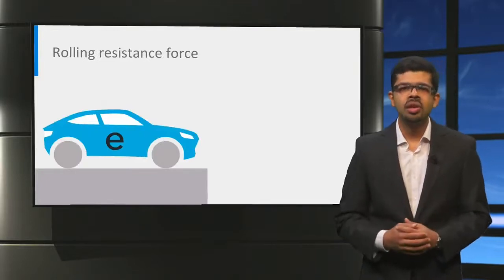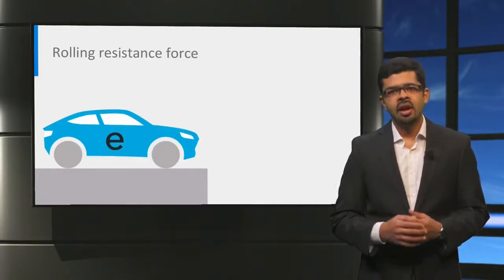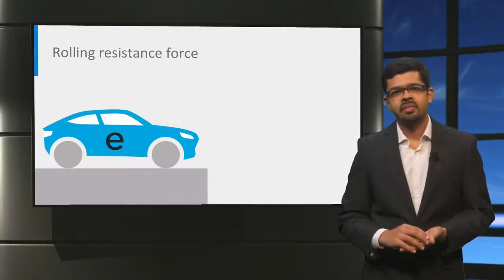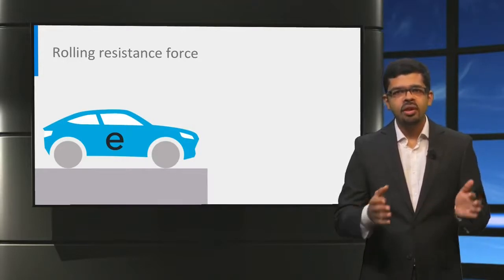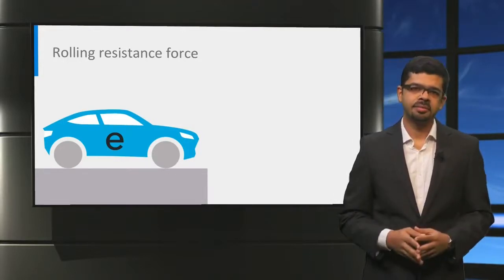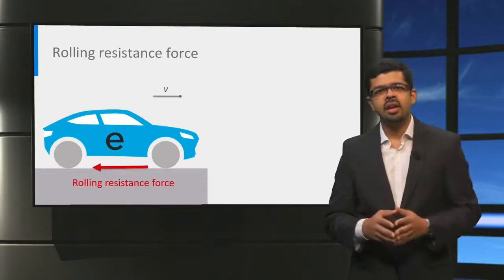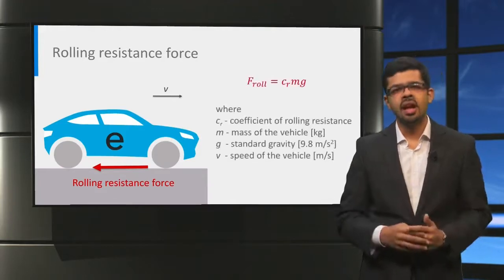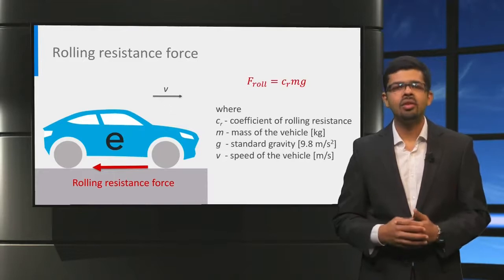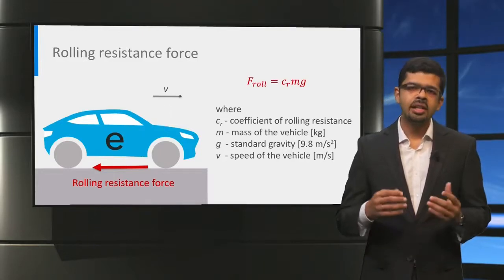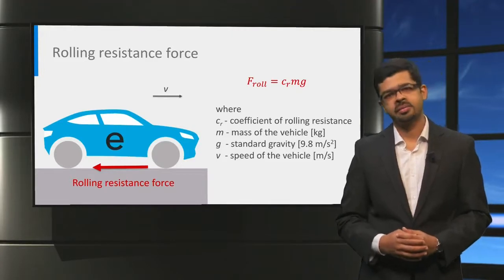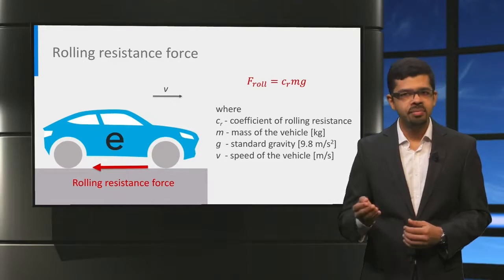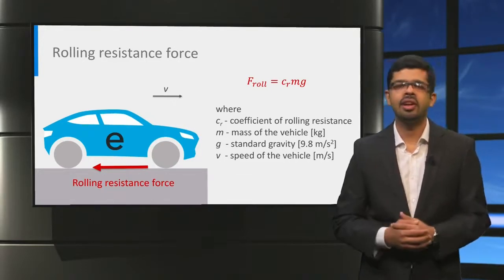Let us first start by analysing the rolling resistance force. The rolling resistance force occurs due to the friction between the tyres and the driving surface. It is zero at standstill. When the vehicle starts moving, the rolling resistance force acts opposite to the direction of motion, and it can be calculated by the rolling resistance coefficient Cr multiplied by the normal force. For a flat surface, the normal force is the vehicle mass m times gravity g, or the weight of the vehicle.